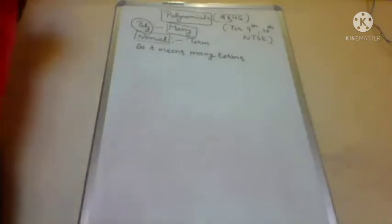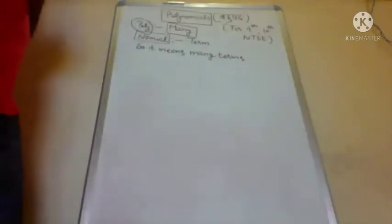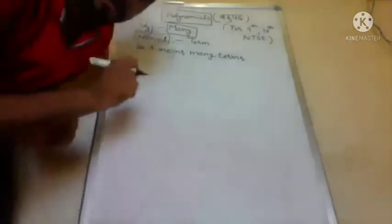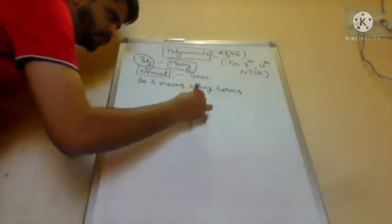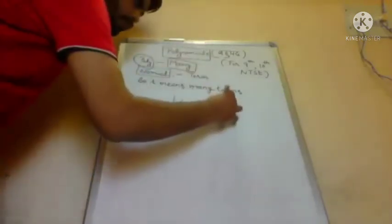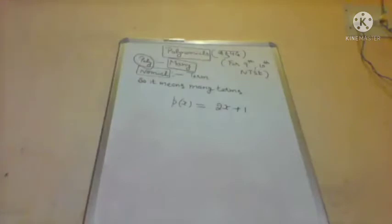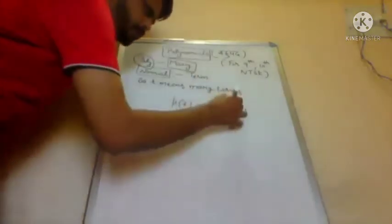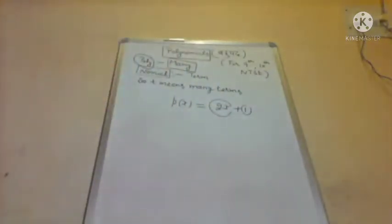It means such an algebraic expression (aisy algebraic expression) jiske andar kaafi zyada terms ho — that has many terms. For example: P(x) = 2x + 1. This is a polynomial. Terms kitne hain? Two terms.